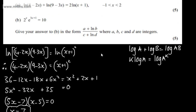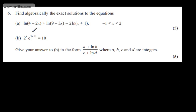That's 5 marks for part A. In part B, we have 2 to the x multiplied by e to the (3x plus 1) equals 10. We're asked to give our answer in the form (A plus ln B) over (C plus ln D), where A, B, C and D are integers, and this part also carries 5 marks.